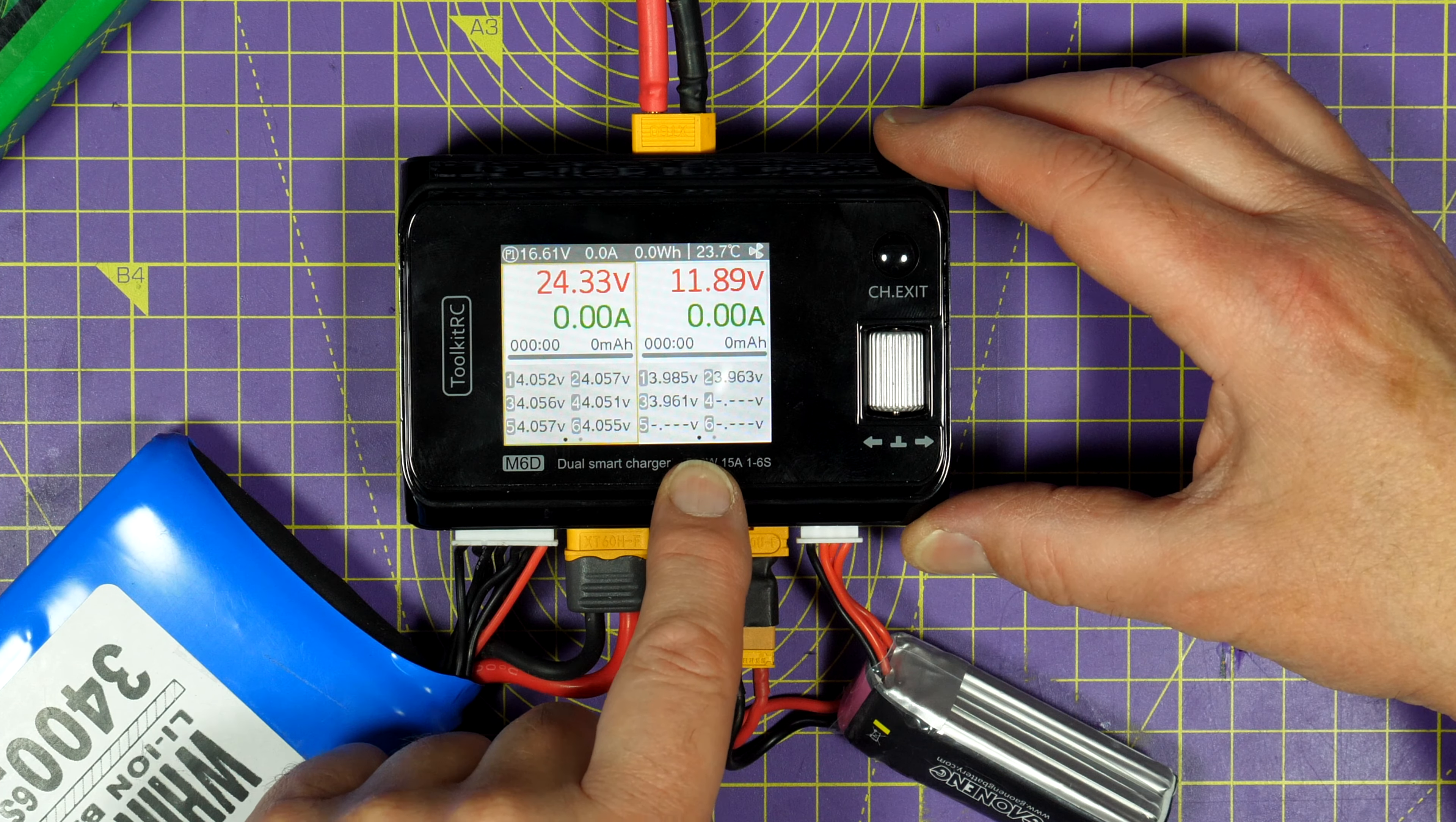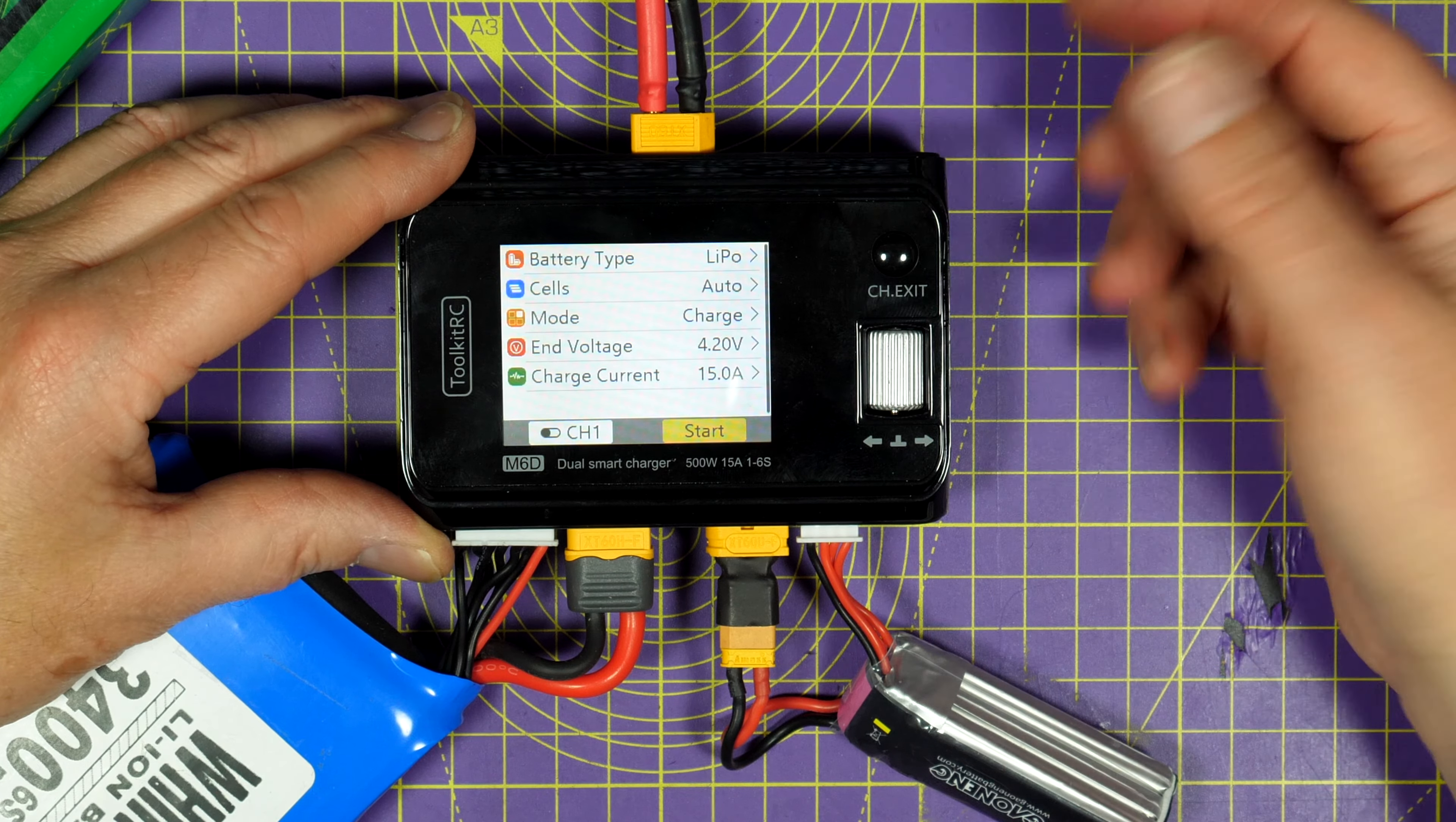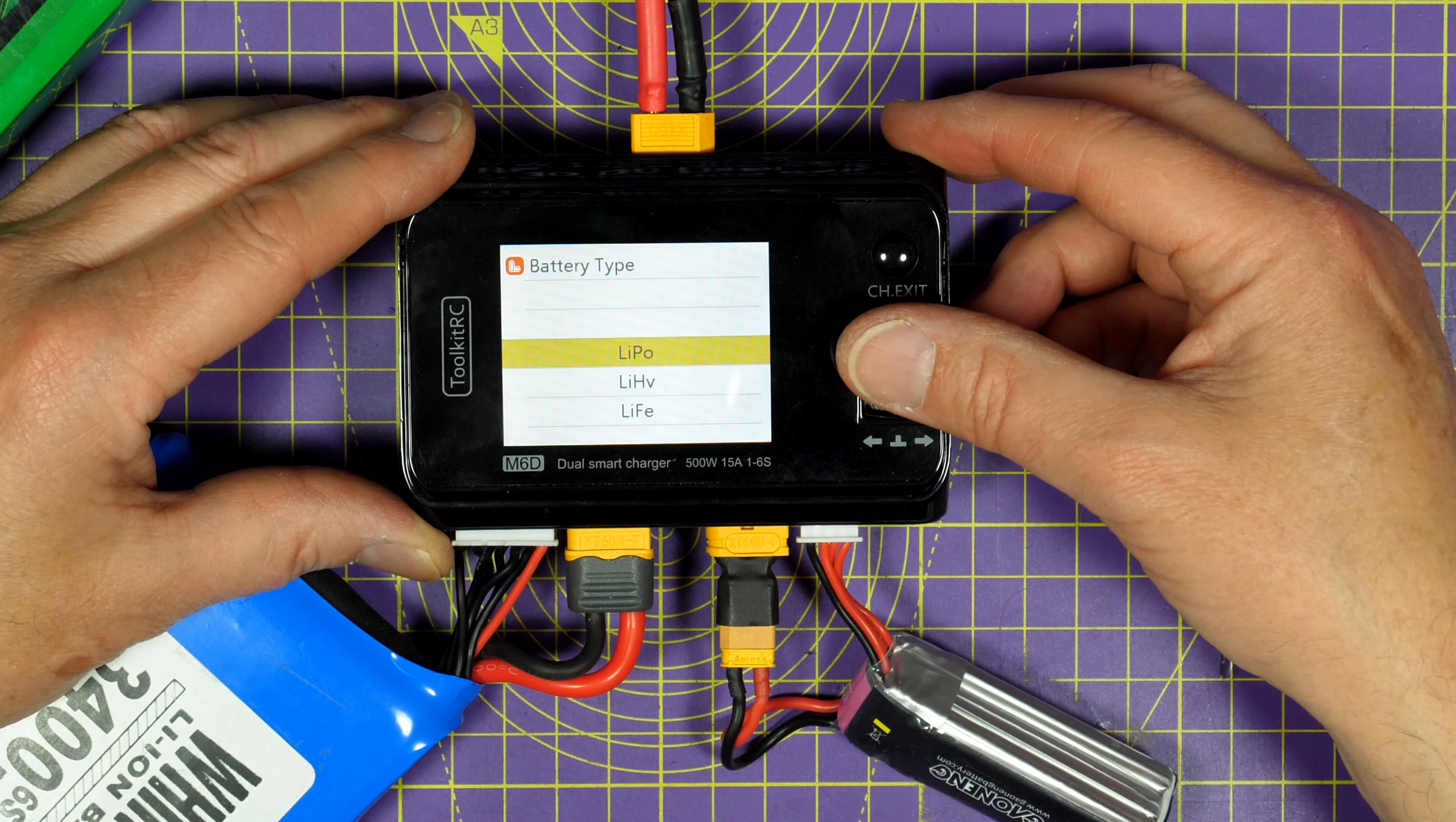So to start charging you just click the scroll wheel. And you can see all the charging options. And if you want to go back you just press the escape key like that. So let's go back in here and have a look. Battery type is LiPo. See what we've got.